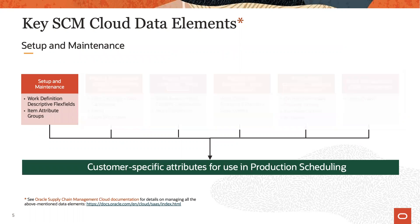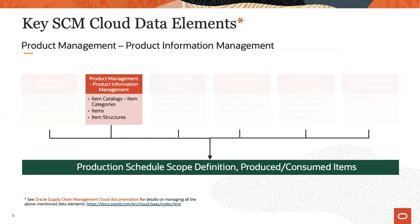Within the setup and maintenance work area, you can define customer specific attributes which can then be assigned to items and to work definition operations. In production scheduling, these attributes can then be used to drive sequencing decisions and to support schedule analysis in the schedule view. From PIM product information management, the item catalog and item categories are used when defining the scope of a schedule, and the items used by the work orders that have to be scheduled are retrieved into production scheduling.